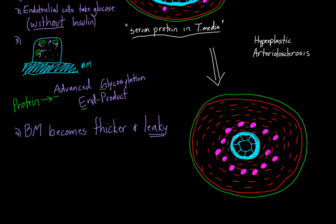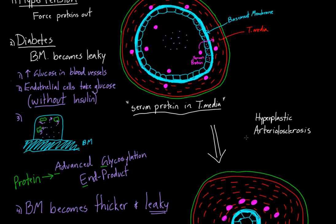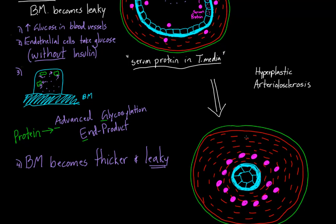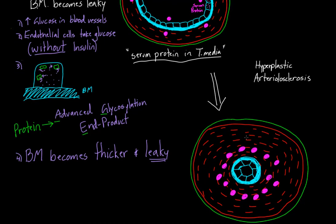I've drawn in the endothelial cells and a little tiny lumen. Compare that to what it used to look like. The enormous lumen has now become very tiny, making it really hard for blood to flow through there.